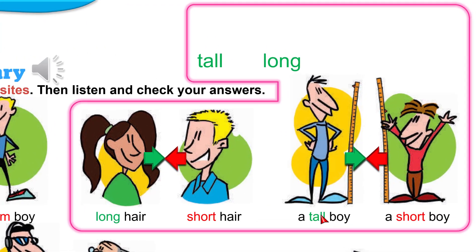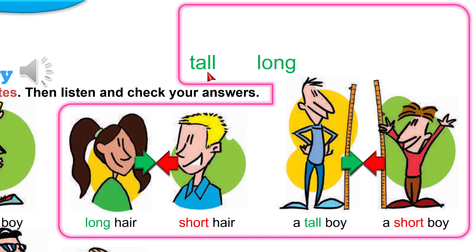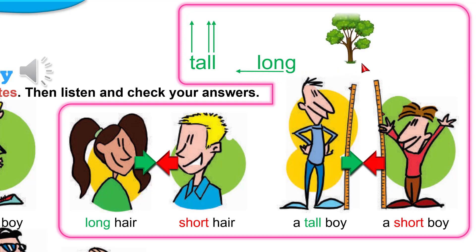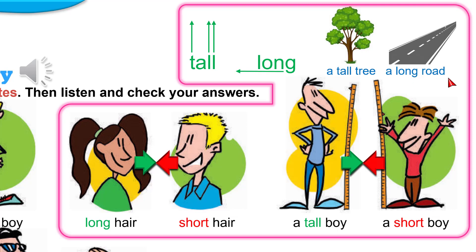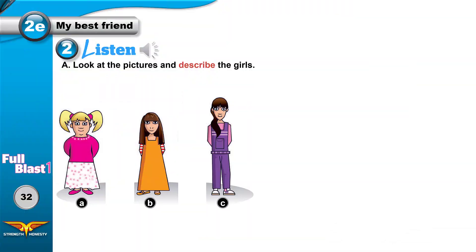Now I want you to know the difference between long and tall. Are they the same? No, they are not. Tall means going vertically; long means going horizontally. Look at the tree — is it a tall tree or a long tree? It's a tall tree. What about the road? It's a long road. A tall man, a tall building, a tall tree.